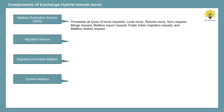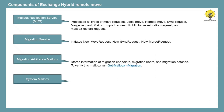The next component of hybrid migration is Migration Service, available in both Exchange Online and on-premise Exchange Server. When you run a migration batch, Migration Service initiates a few PowerShell commands in the background — for example, New-MoveRequest in case of hybrid migration, New-SyncRequest if you are running IMAP migration, and New-MergeRequest in case of cut-over or staged migration. The next component is the Migration Arbitration Mailbox, which stores information about migration objects such as migration endpoints, migration users, and migration batches.